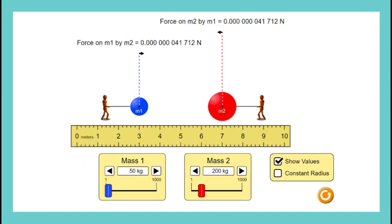Now let's jump into the lab and take a look at how the universal law of gravitation is affected by mass 1, mass 2, and the distance between them. Let's play.